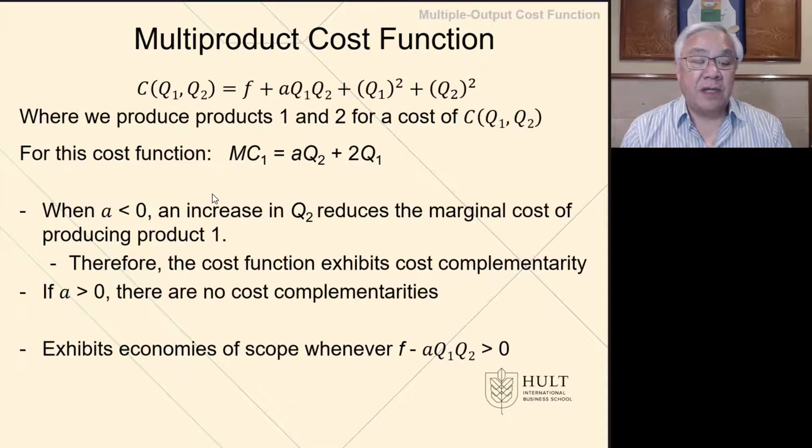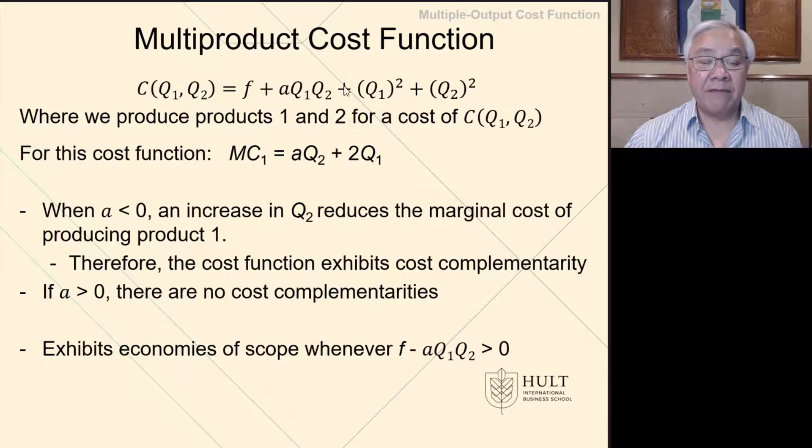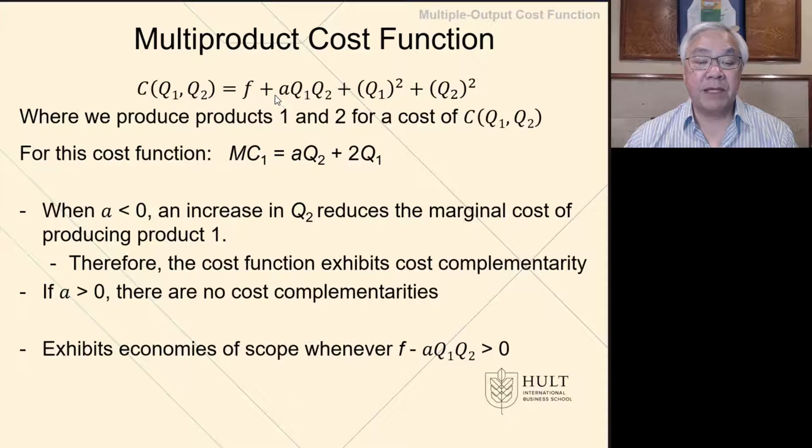We'll look at a multi-product cost function where we have two products, Q1 and Q2, and we have the cost equation. Here we have F again, fixed cost, plus AQ1Q2 plus Q1 squared plus Q2 squared.